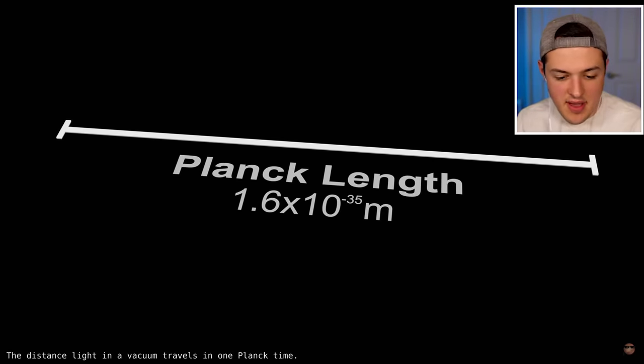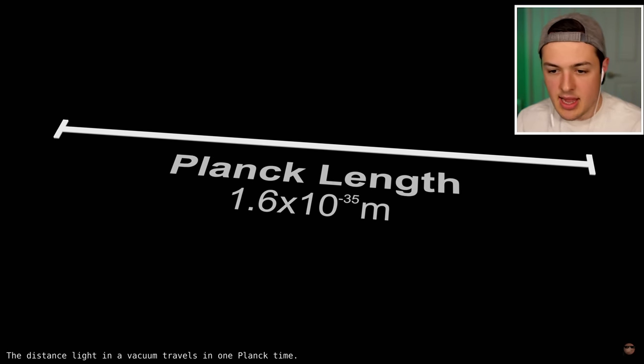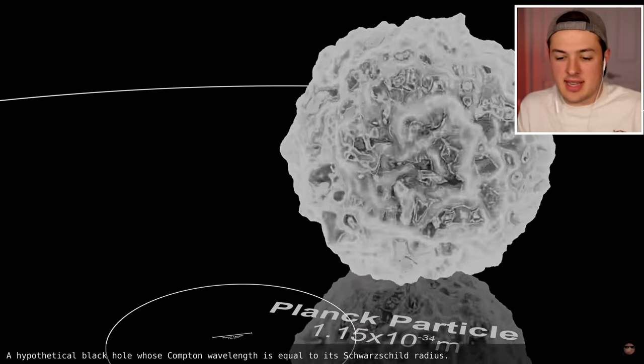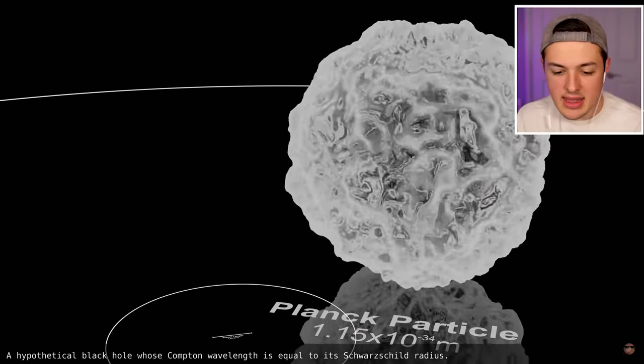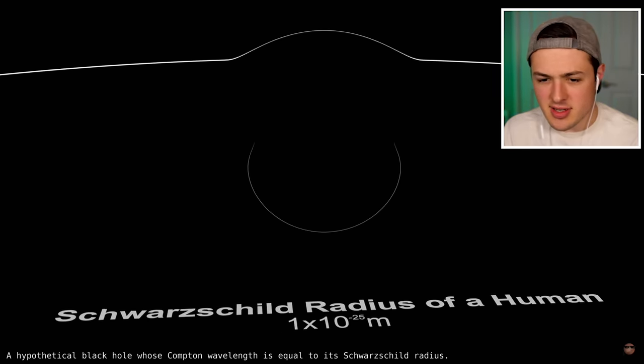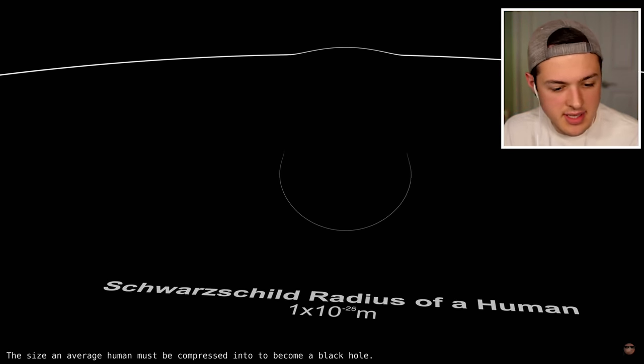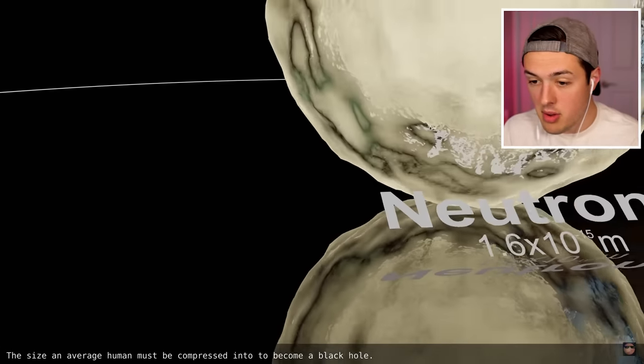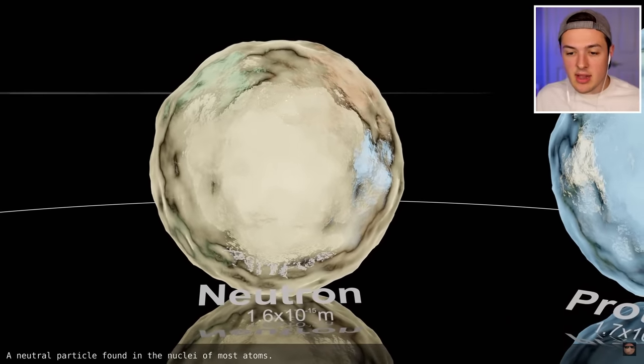The distance light in a vacuum travels in one Planck time. Okay, so I think that's like the universal measurement. I guess that's like the tiniest thing that we're able to observe is something called a Planck length and a Planck particle. So it kind of almost looks like a universe in and of itself. This is the size an average human must be compressed into to become a black hole. Okay, this is a neutron.